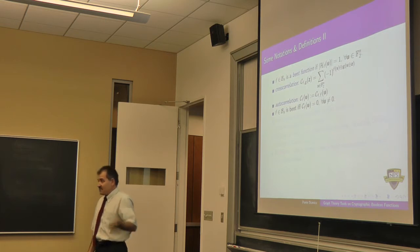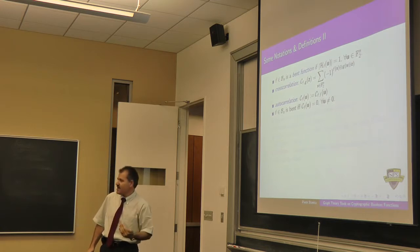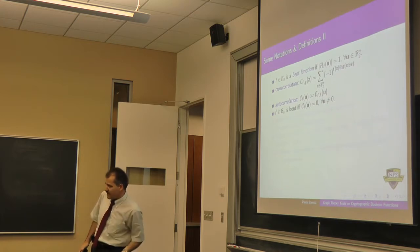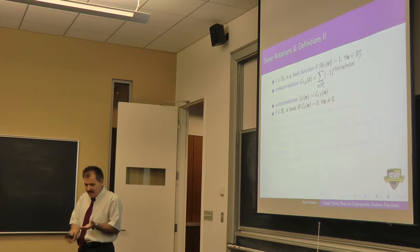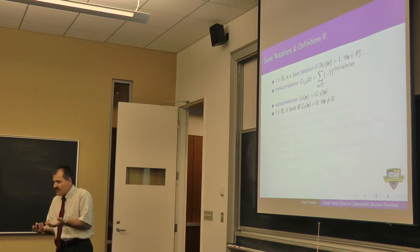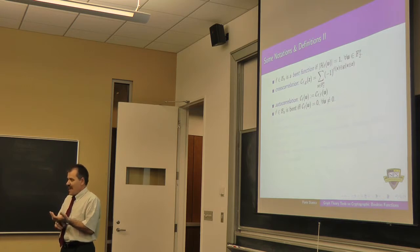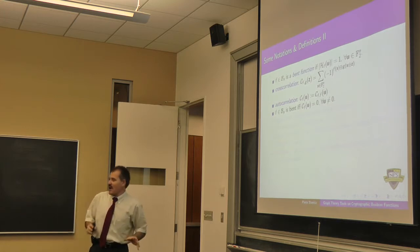Bent functions achieve the maximum nonlinearity — they are as far away from being linear or affine as possible. This happens only for n even. It is still open what happens for n odd. In fact, we know so little about this that we don't even know what happens for n odd when n is 11, let alone 30 or 31. NIST or NSC suggests using about 30 variables in these ciphers.